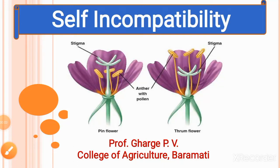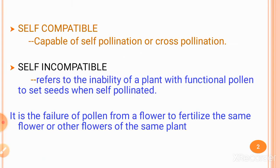Hello dear students, welcome again. Self-incompatibility is the topic today. First, we will see what is meant by self-compatibility. Self-compatibility is the ability of a flower to produce seeds when it is self-pollinated or cross-pollinated — that is, if you fertilize the stigma of a flower using pollen grains from the same flower or another flower on the same plant.